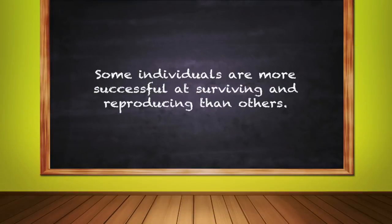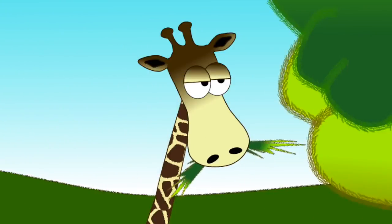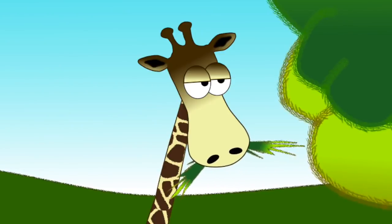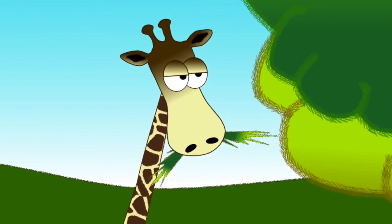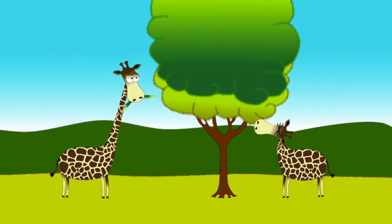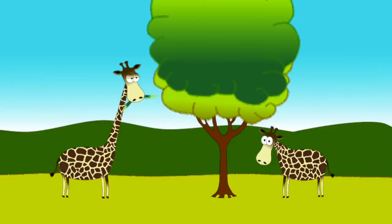Condition number three: some individuals are more successful at surviving and reproducing than others. In the case of our giraffes, the long neck individual did not acquire its neck by stretching to grab the leaves. Instead, individuals within the population were born with the neck length that was longer than others. Because the longer neck allowed them to reach the food that was otherwise unattainable, it gave them an advantage.